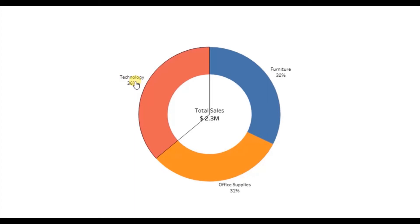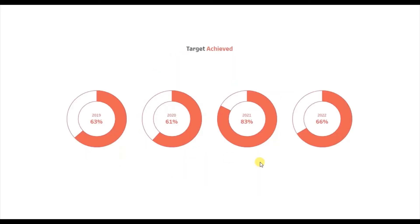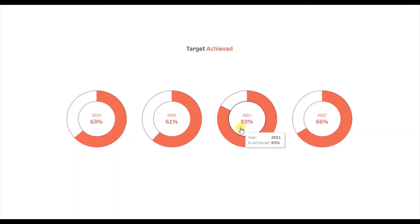Today we will see how to visualize a single measure using a donut chart when we don't have any dimension to split the donut chart into slices. Here I have 4 donuts for 4 different years. Each donut represents what percentage of total target was achieved in a particular year out of the total 100%. For example, 63% of the total target was achieved in 2019, and 83% in 2021. Now let's jump to Tableau and see how to create a view similar to this one.